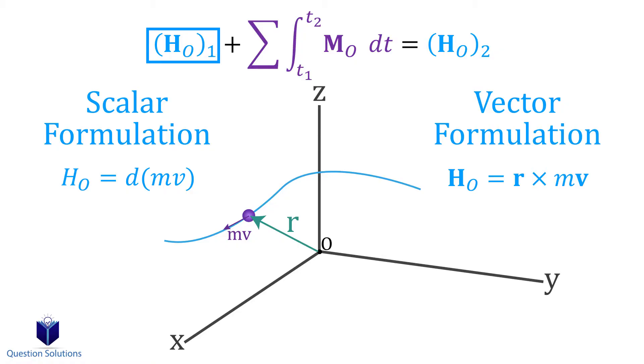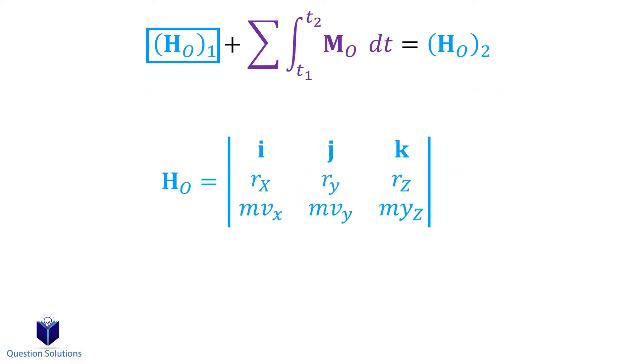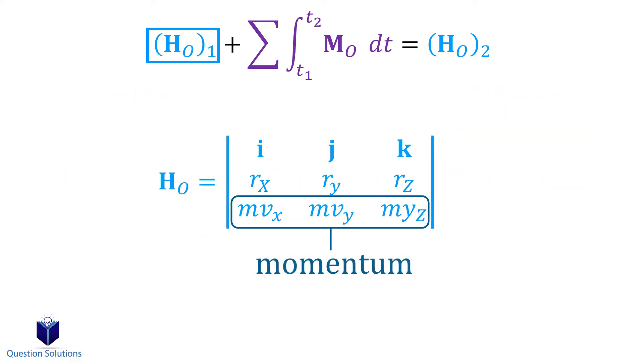When we do this, we need to make sure that both the position vector and the mass times velocity is expressed in Cartesian vector form. This will make a lot more sense when we take a look at examples.